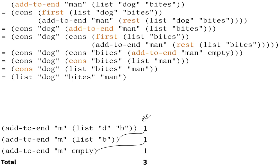To be careful here, the only reason we can fudge the numbers like this and treat eight and three as about the same amount of time is that the difference between eight and three doesn't get any bigger when the input to the program gets bigger. So our conclusion is: it takes three steps to add to the end of a two-element list.